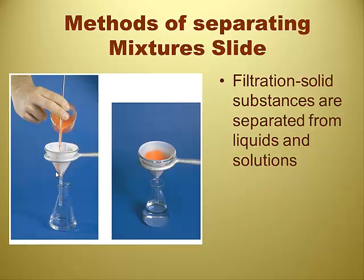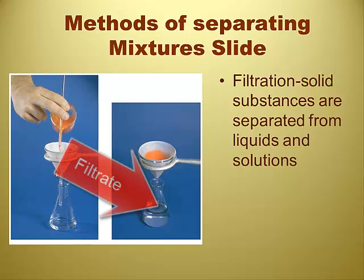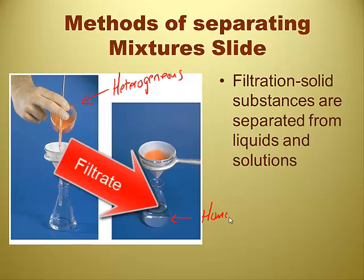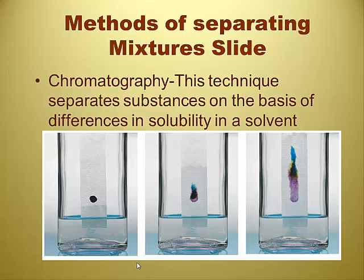Filtration is a simple way of separating a chunky mixture — usually used to separate a solid from a liquid. The liquid that collects in the Erlenmeyer flask is called the filtrate. The original mixture is heterogeneous, whereas the filtrate should be homogeneous. Chromatography is usually used in the ink business — it separates substances based on differences in solubility in a solvent. For example, a blue ink molecule has different solubility than a violet one, so it dissolves faster in the solvent.